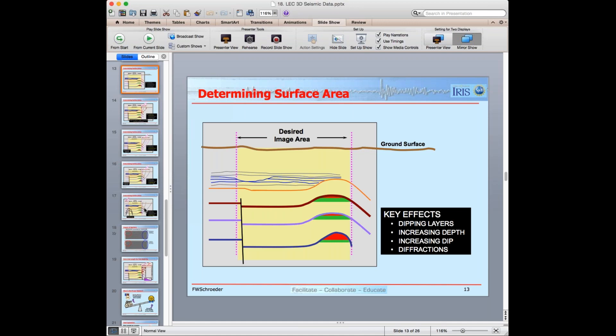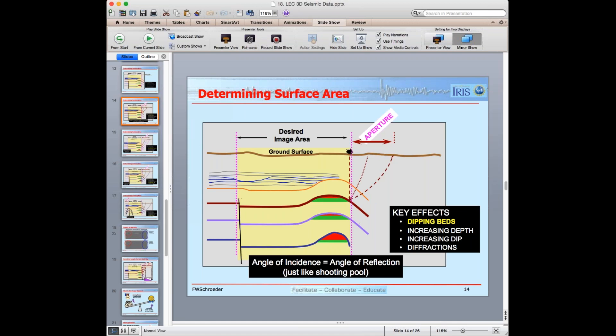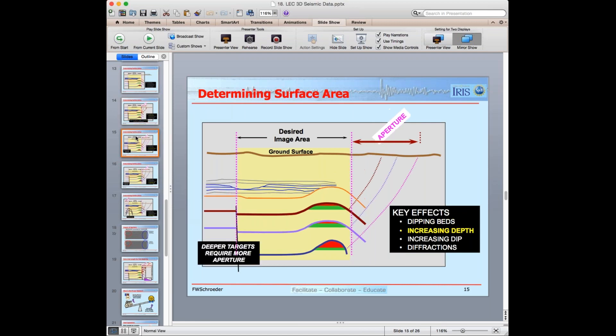As I click to the next one, now increasing depth is shown in yellow in the black text box on the lower right. You can see I've drawn zero incident brown line to the fourth layer or so, kind of pale blue to the fifth layer, and then a magenta to the sixth layer. So as I go deeper and deeper and deeper, I need to have more space off of the image area. That's what we call the aperture.